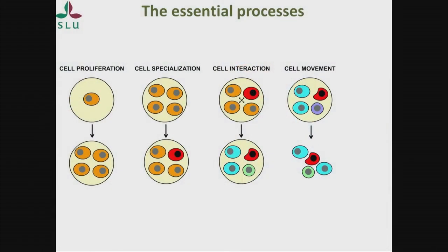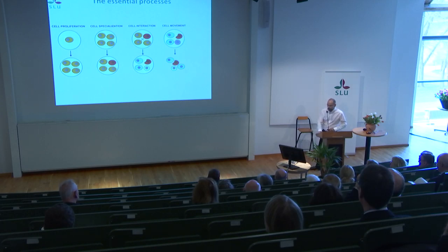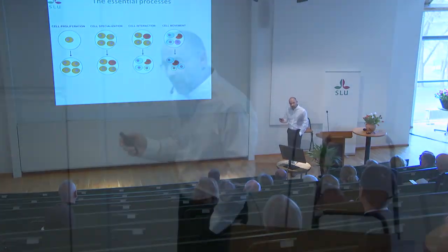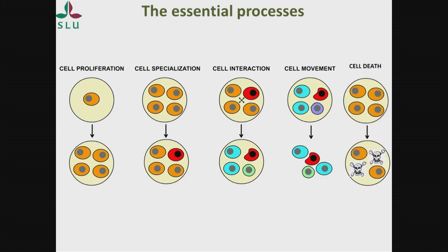There are four major processes that cells can do in our body. They can proliferate or divide, so you can get many cells from one cell. They can specialize — this red cell becomes different from the surrounding cells. Of course, cells interact and this also affects their functions. Animal cells, not plant cells, can also move to a new position, and by this way they can attain a new function. But there is a fifth process which is always very, very important for organismal development.